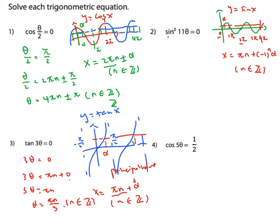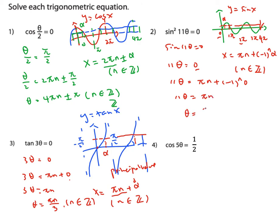So let's solve this. Sine squared of something equals 0, so sine of that angle equals 0. Hence 11θ equals 0, and the angle must equal 0 as well. Using the general solution before solving for θ: 11θ equals nπ plus (−1)ⁿ · 0. Because the principal value is 0, that term vanishes. So 11θ equals nπ, and θ equals nπ/11, where n is an integer.